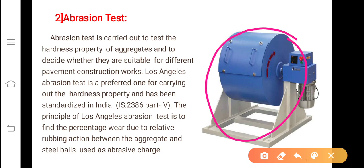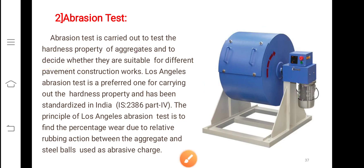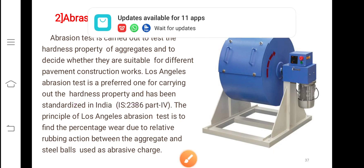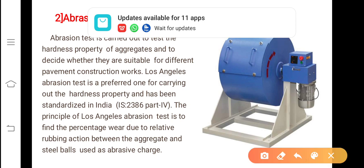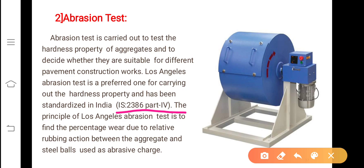Abrasion test is carried out to test the hardness property of the aggregates and to decide whether they are suitable for different pavement construction works or not. Los Angeles abrasion test is preferred for carrying out the hardness property and has been standardized in India by IS 2386 part 4. The principle of Los Angeles abrasion test is to find the percentage wear due to relative rubbing action between the aggregate and steel balls used as abrasive charge. In the field, friction and abrasion takes place between the wheels and the pavement, and even some sand particle or fine particle may come in between producing abrasion.